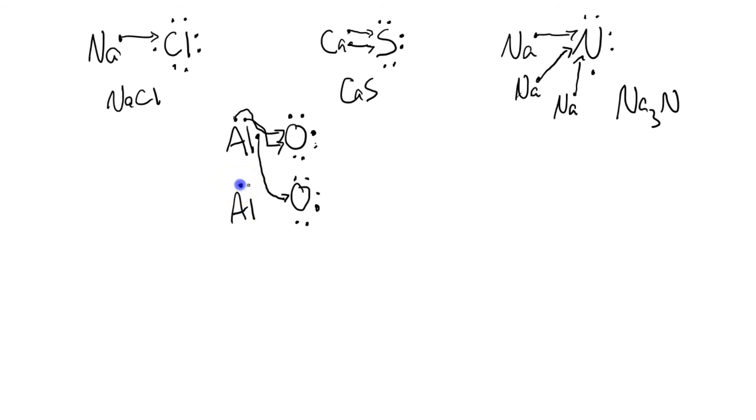So we're going to bring in a second aluminum with its 3 dots. Alright, so it's able to give up that 1 electron right there. So oxygen is now happy, but aluminum is not happy.